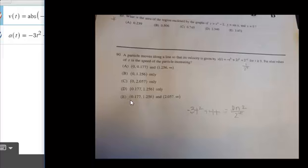we see that E is our correct answer, because 0.177 to 1.256 is where the velocity is increasing. 2.057 to infinity, the velocity is actually decreasing on that interval, but the speed is increasing. What's happening is you can think of the velocity increasing in the opposite direction. This might be where our object is going up, this could be where our object is going down, but it's still a place where our speed is increasing.